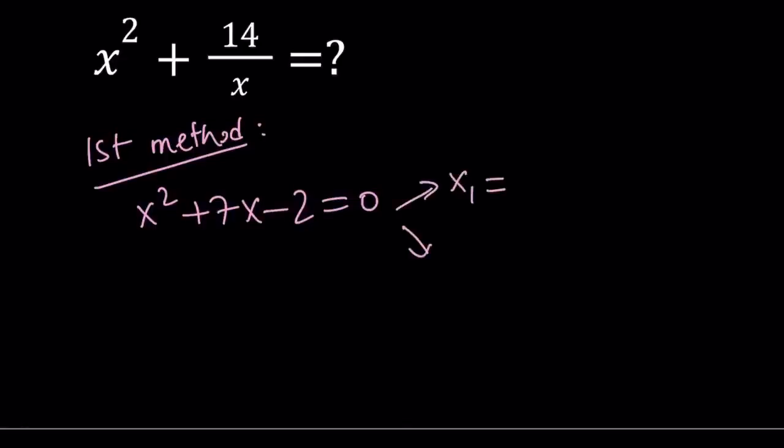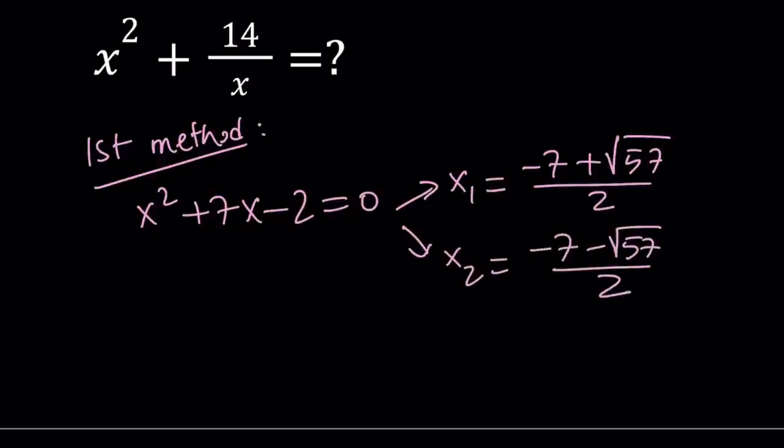x sub 1 is going to be negative b plus square root of b squared, which is 49, plus minus 4ac. That's going to become 57, divided by 2. And the other solution is going to be negative 7 minus square root of 57 over 2. We're going to use one of these roots. I'm going to use the first one.